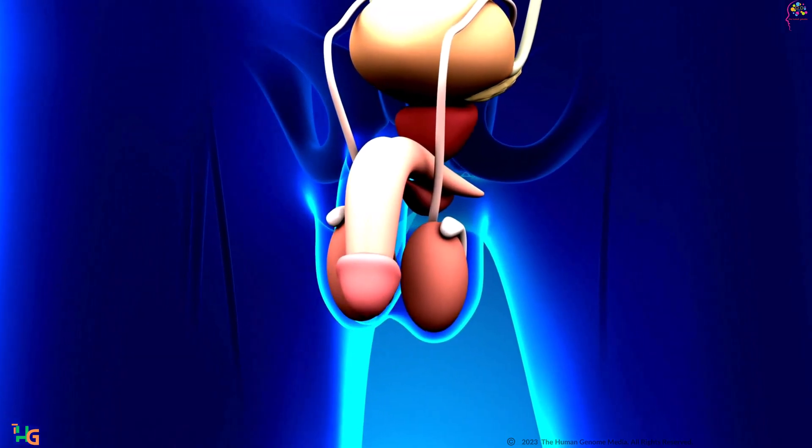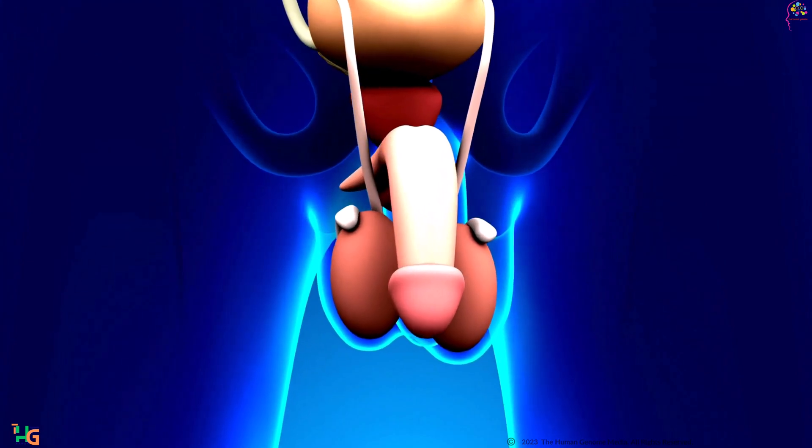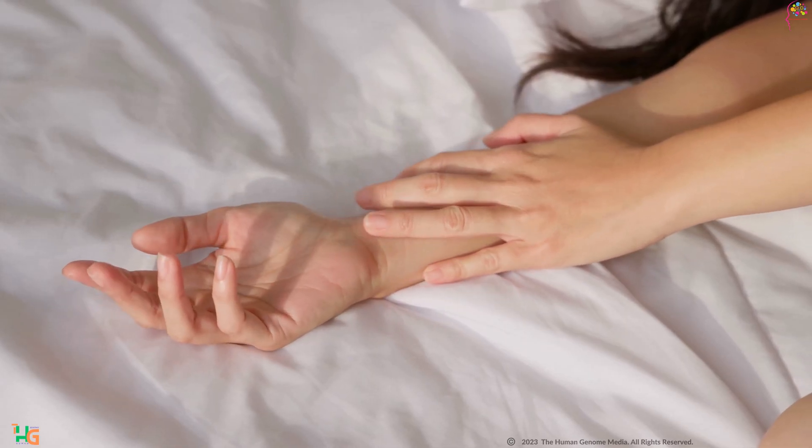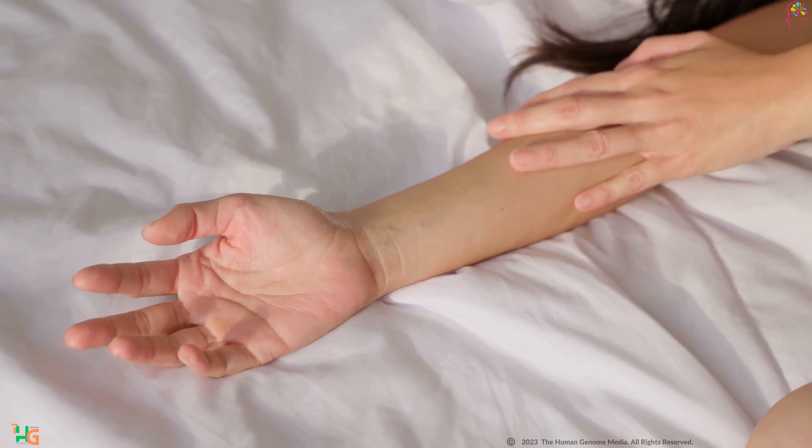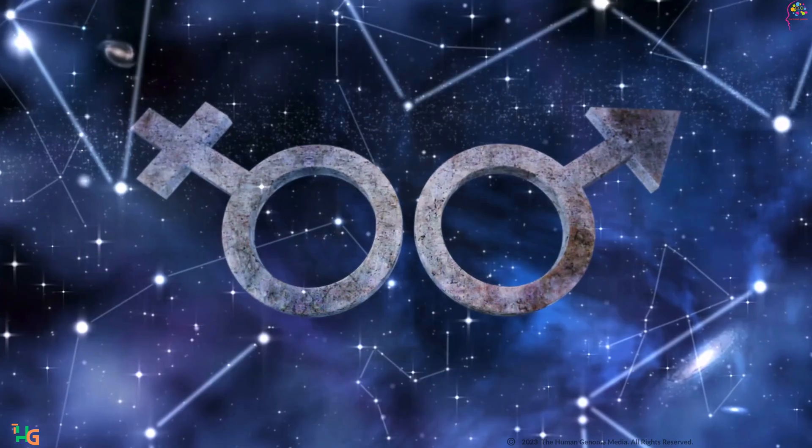The penis is the male organ used for sexual intercourse and urination. During sexual arousal, it becomes erect, facilitating the insertion of sperm into the female reproductive tract.